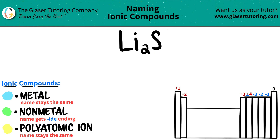One has to be a metal and one has to be a non-metal. That's what ionic compounds are all about if you have two elements.